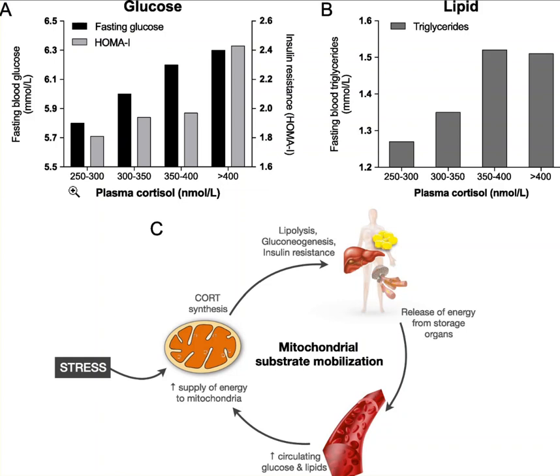When looking at this diagram, you can really see what's going on and perhaps it will enlighten us to see how we can reverse this condition. You can see here on the left that as stress enters the body, the mitochondria produce something called cortisol. Cortisol is an adaptive hormone to stress, and we'll see in a second just the actions taking place in this scenario.